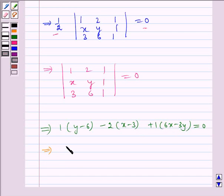Which implies y - 6 - 2x + 6 + 6x - 3y equals 0. Now this gets cancelled.